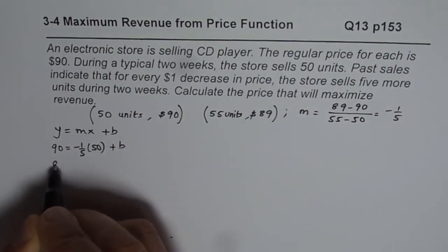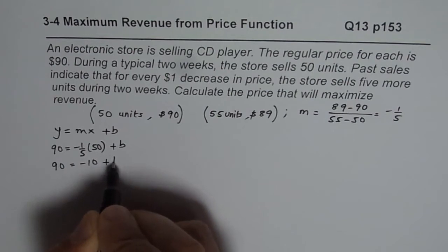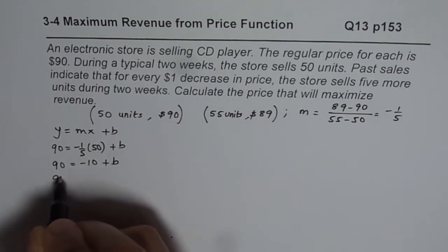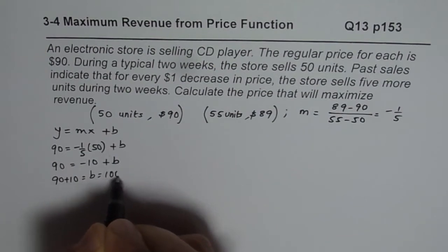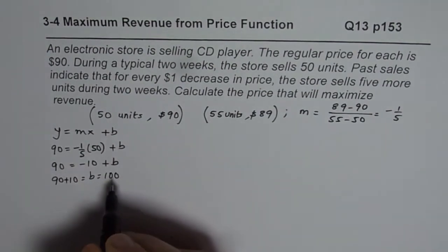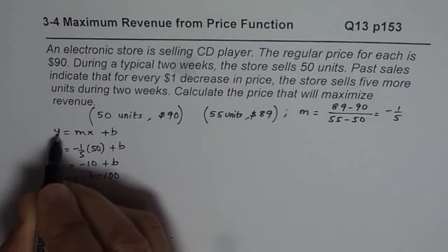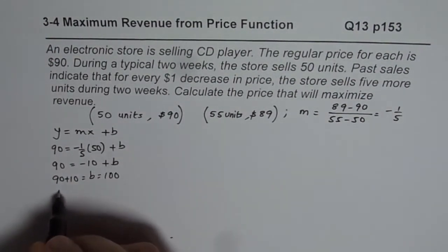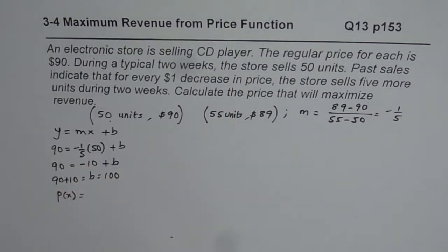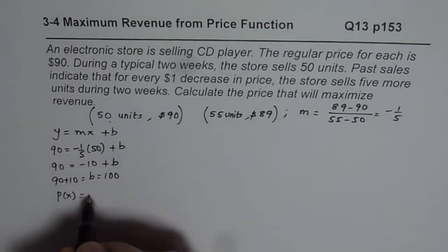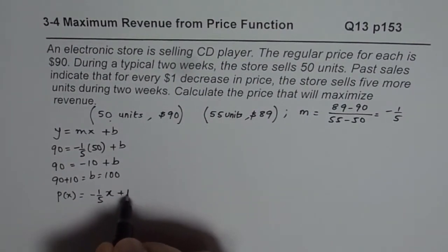So from here we get 90 equals minus 10 plus b, or 90 plus 10 is b, which is 100. So that gives you the price function. So b is 100. So we can say y is our price, so we'll write this as the price function P of x, where x is the number of units being sold. Slope is minus 1 over 5, x plus 100.